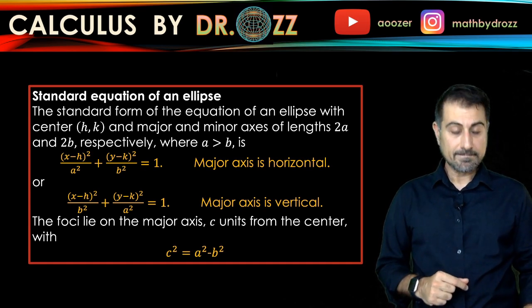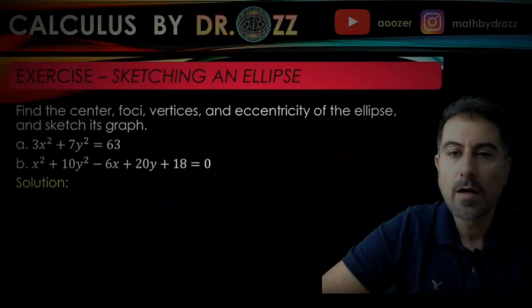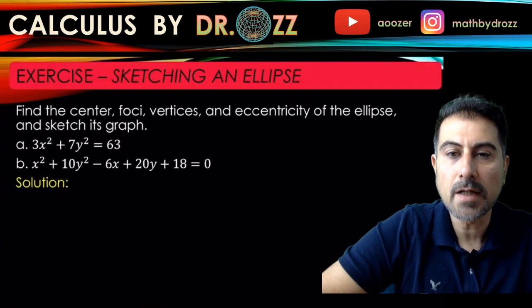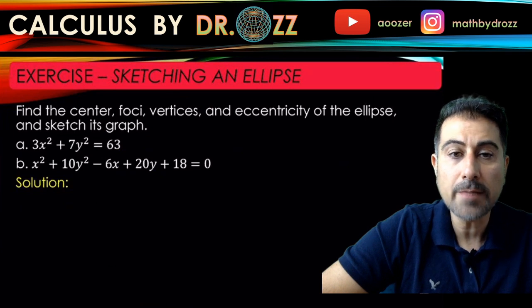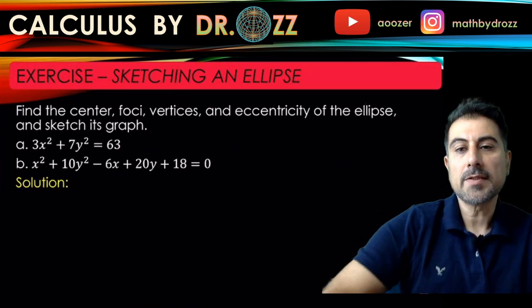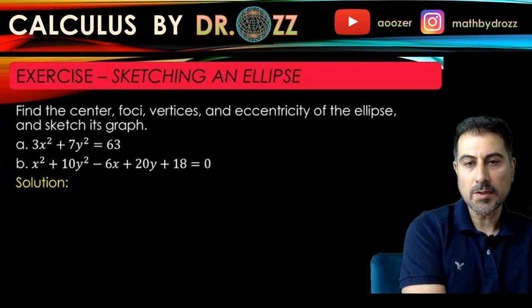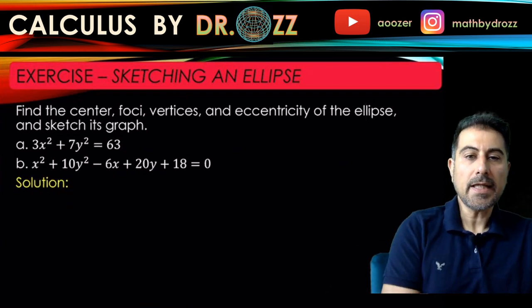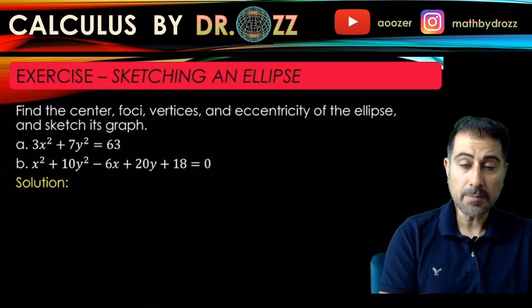All right, let's get started. All right, let's stare at part A. We're given the equation of an ellipse. 3X squared plus 7Y squared equals 63, and we're going to find the center, foci, vertices, and the eccentricity of this ellipse.